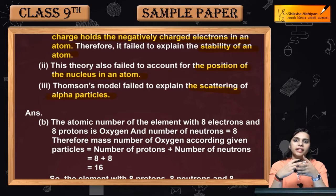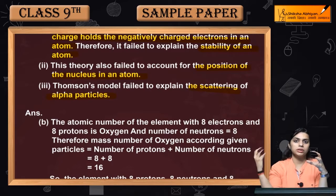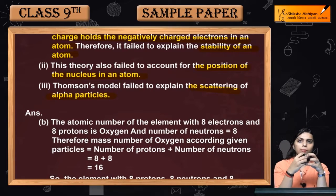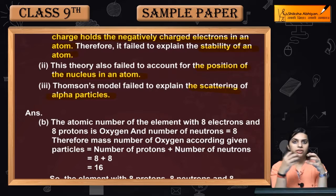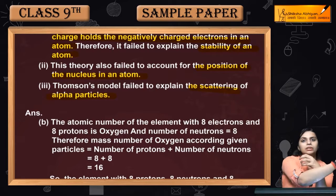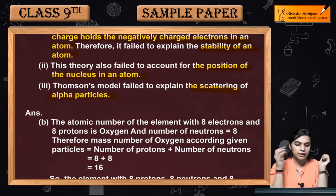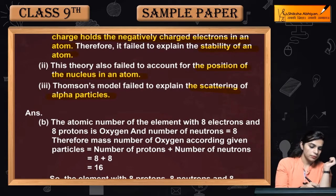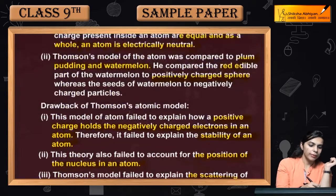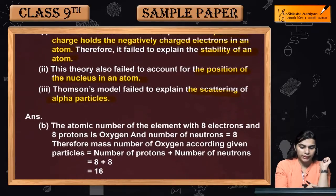It cannot justify what should happen when we bombard something from a source. It should have passed straight through, but that did not happen — it was scattered in different directions. So these were Thomson's postulates and drawbacks.